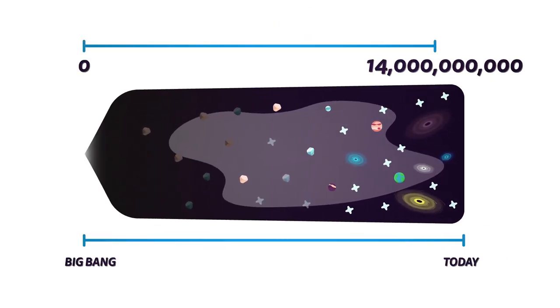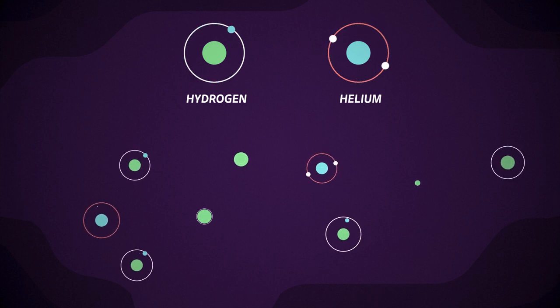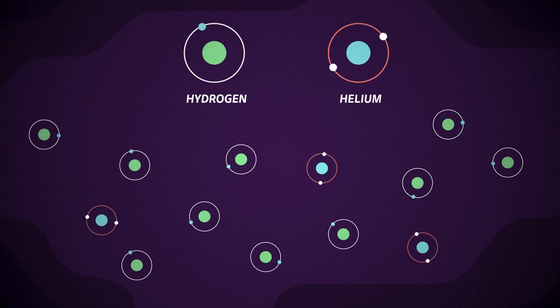The universe is roughly 14 billion years old. After the hot, dense Big Bang, the universe was dark and cold, filled mainly with hydrogen and some helium atoms, spread vastly apart floating through space in a time known as the Dark Ages.